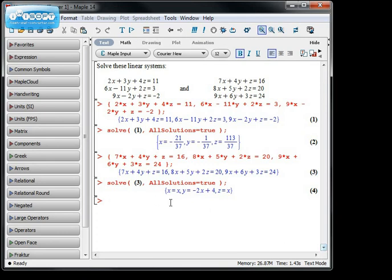And in this case, the general solution comes out being x is equal to x, y is equal to minus 2x plus 4, and z is equal to x.